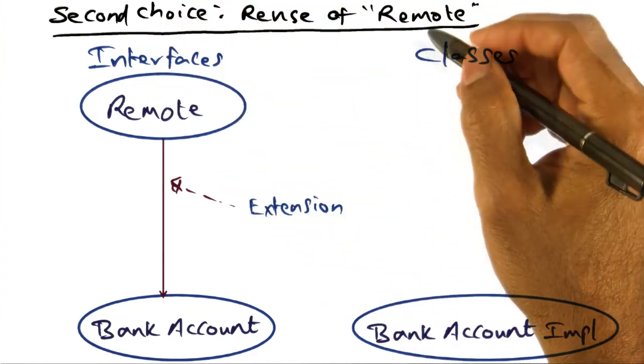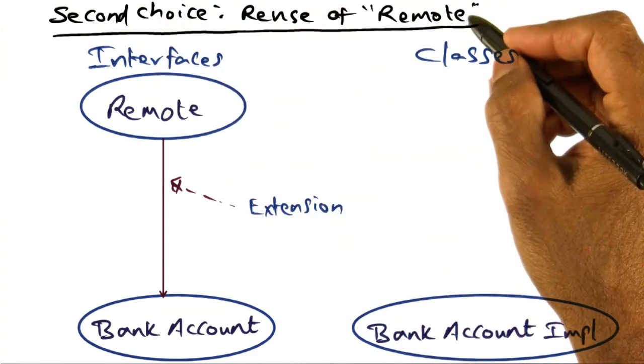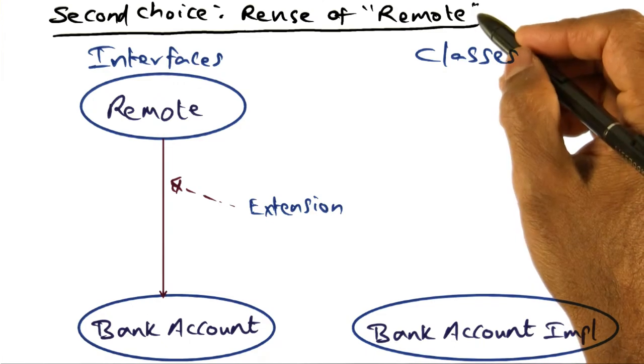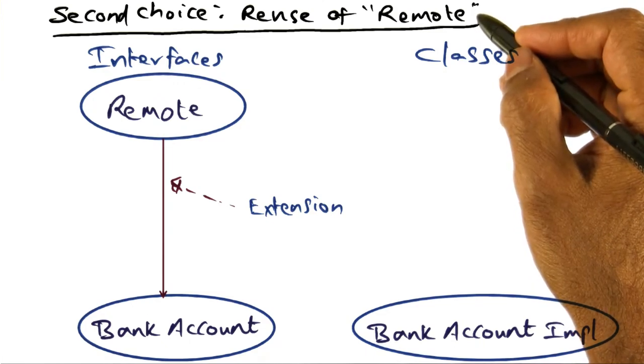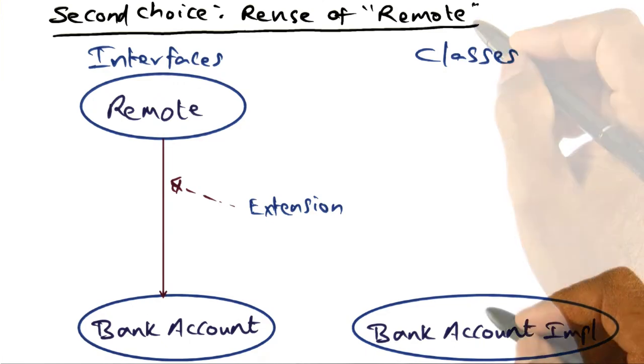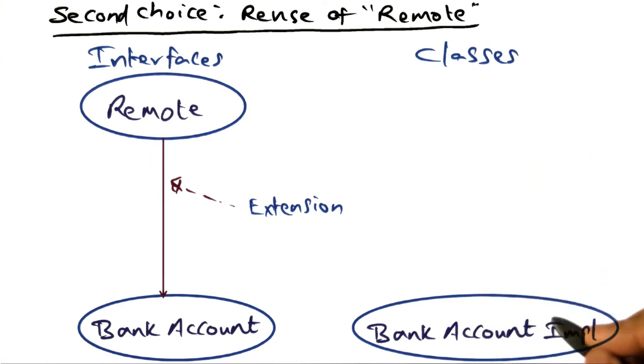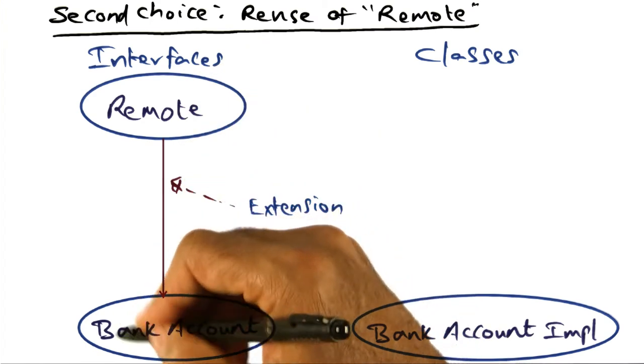The second choice is reusing the remote object class that's available in the Java distributed object model. As before, the developer writes the bank account object, providing the methods for deposit, withdraw and balance, and publishes the methods that are in that object using the remote interface.